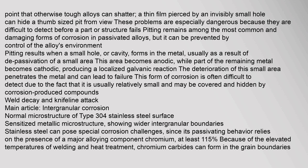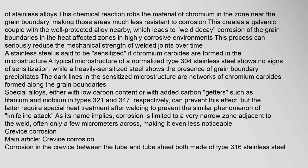Weld decay and knife-line attack — main article: intergranular corrosion. Stainless steel can pose special corrosion challenges, since its passivating behavior relies on the presence of a major alloying component — chromium — at least 11.5%. Because of the elevated temperatures of welding and heat treatment, chromium carbides can form in the grain boundaries of stainless alloys. This chemical reaction robs the material of chromium in the zone near the grain boundary, making those areas much less resistant to corrosion. This creates a galvanic couple with the well-protected alloy nearby, which leads to weld decay — corrosion of the grain boundaries in the heat-affected zones.